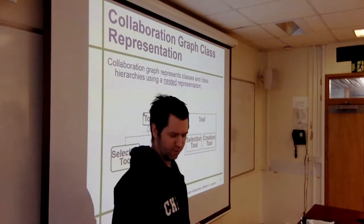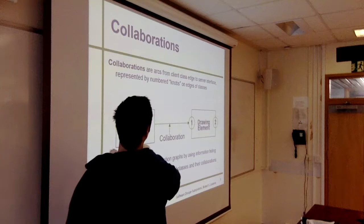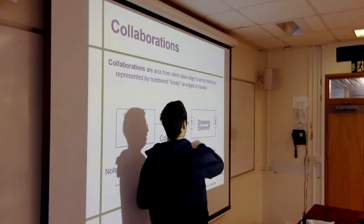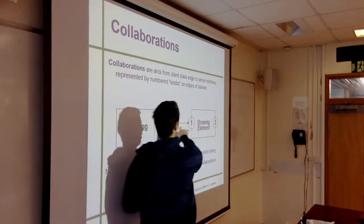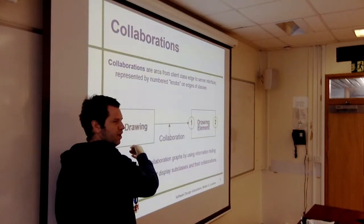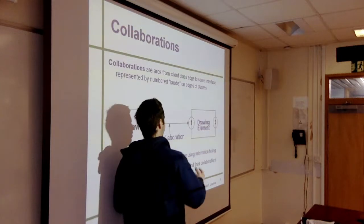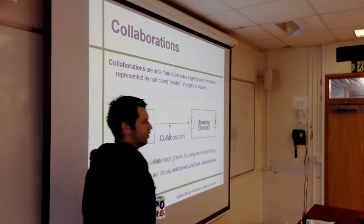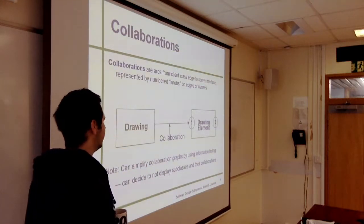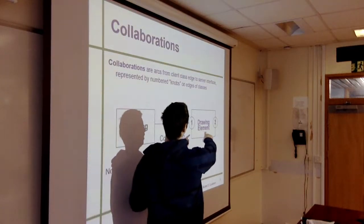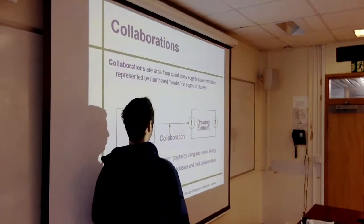You can also represent collaborations that way. For example, we have a class called Drawing and a class called DrawingElements, and there's a communication between the two classes, represented by an arrow. The Drawing would be the client class, and DrawingElement would be the server class. The communication is from the client to the server, and it's given a label like the number one. Hidden behind this diagram is a method inside Drawing that calls DrawingElements — one or more methods or procedures.